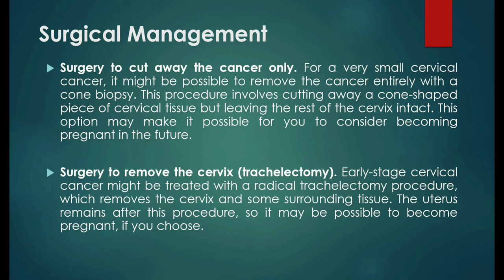Surgical management. Early-stage cervical cancer is typically treated with surgery. Which operation is best depends on the size of your cancer, its stage, and whether you would like to become pregnant in the future. Options include surgery to cut away the cancer only — for a very small cervical cancer, it might be possible to remove it entirely with a cone biopsy, cutting away a cone-shaped piece of cervical tissue while leaving the rest of the cervix intact. This option may allow you to consider becoming pregnant in the future. The second option is surgery to remove the cervix, or trachelectomy. Early-stage cervical cancer might be treated with a radical trachelectomy, which removes the cervix and some surrounding tissue.